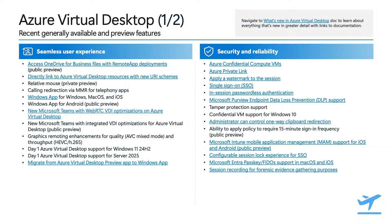Mobile Application Management for iOS and Android devices is also in public preview, and allows users to customize device redirections and strengthen the security of the physical device used to access Windows 365 cloud PCs or Azure Virtual Desktop virtual machines across environments that are unmanaged, managed by external tenants, or managed by organizations.